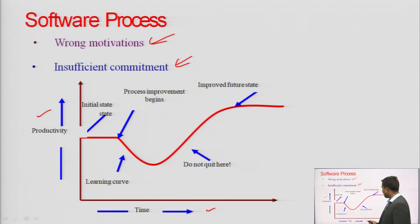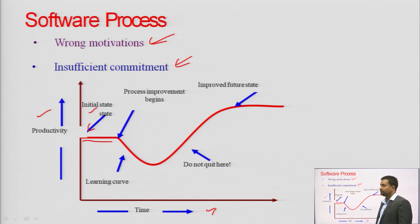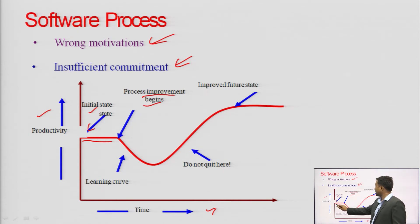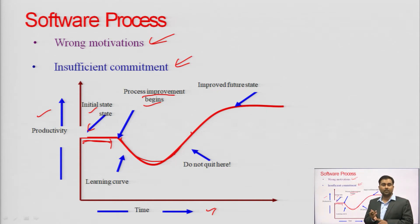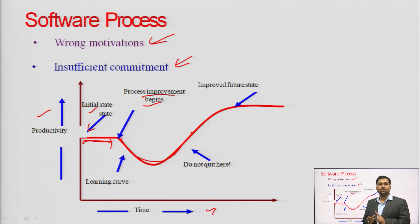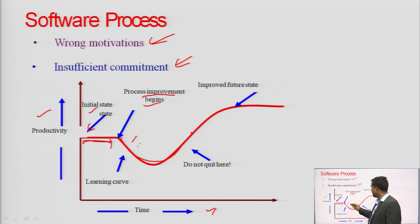The graph shows productivity versus time. When we start a project, there is an initial state. After that, process improving begins. Then comes learning — the team needs to learn what challenges are coming in code, in designing. For things we haven't yet developed, we need more time, innovation, thinking, and a problem-solving approach. This is the area shown on the graph.